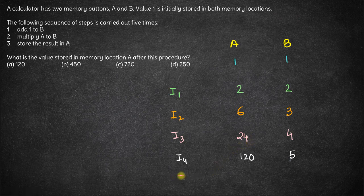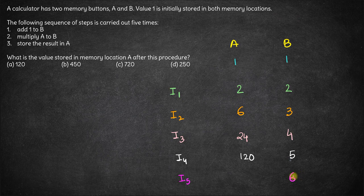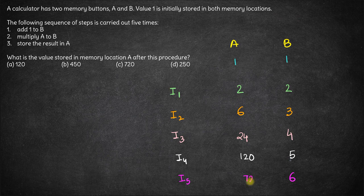Finally, in the fifth iteration, we add 1 to B, which becomes 6, then multiply 120 times 6. This result, 720, is stored in A.